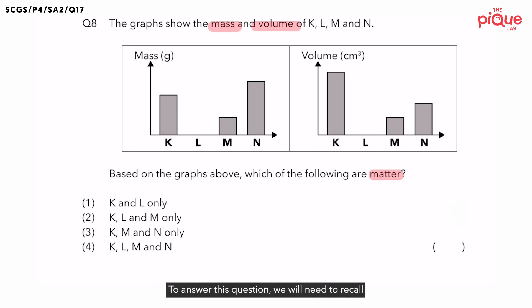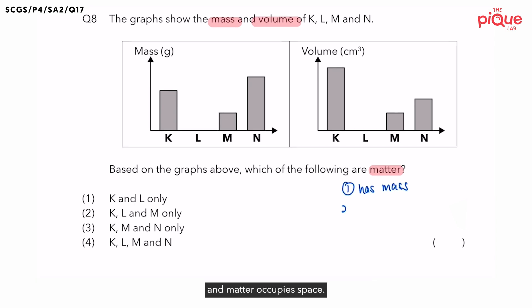To answer this question, we will need to recall the important properties of matter first. So what are the two properties of matter? The properties of matter is that matter has mass and matter occupies space. So let's focus on the first property of matter first.